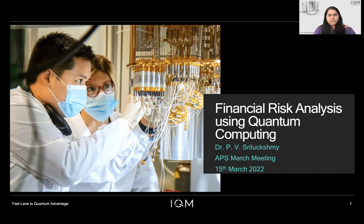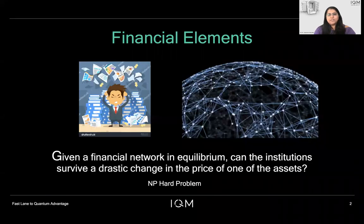Without further ado, let me begin by asking the question: given such a complicated network of financial institutions, can there be a drastic change in one of the components of these institutions such that the institutions survive such a drastic change? This problem is an NP-hard problem due to the different unpredictable factors involved. We would like to study this model and improve on the existing techniques.